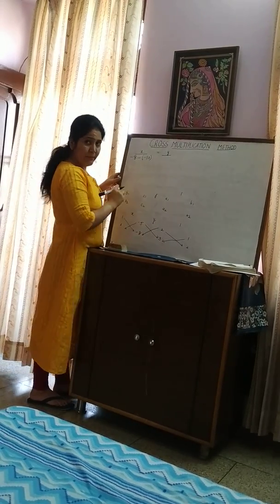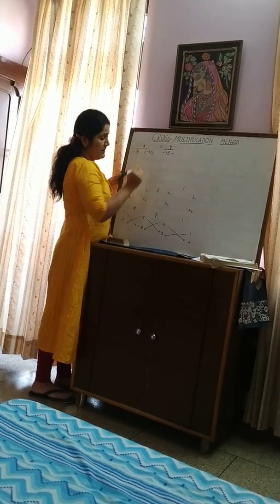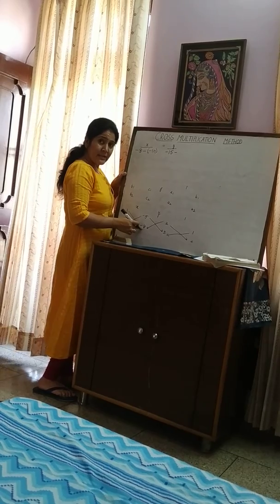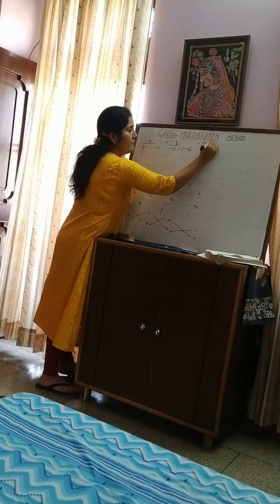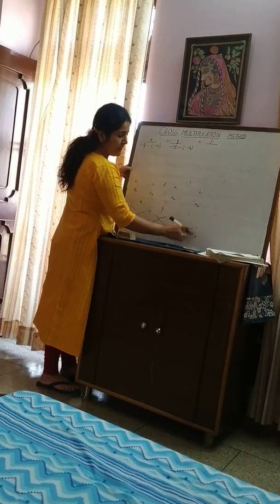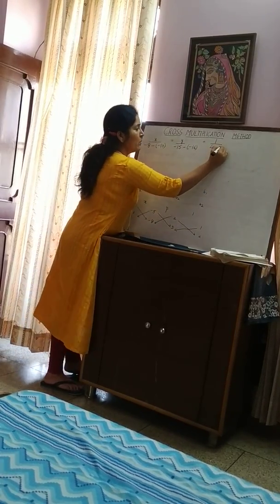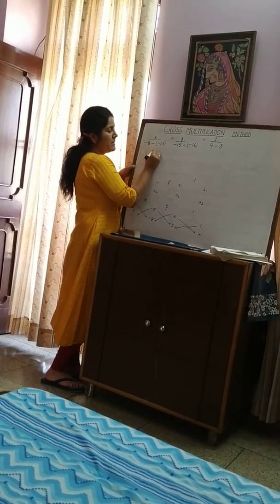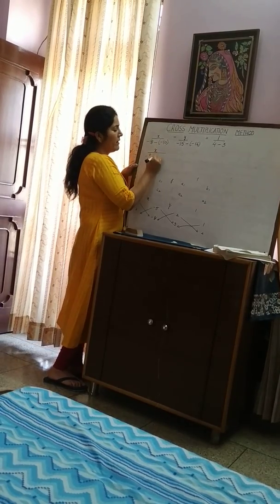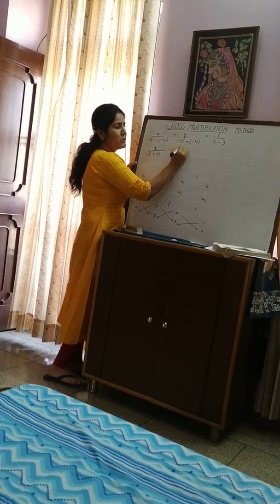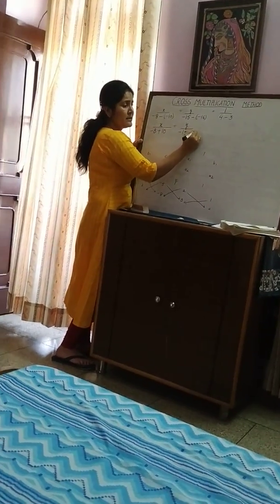In the same way for y: (-5) × 3 = -15, and 2 × (-8) = -16. Similarly for the denominator: 2 × 2 = 4, and 1 × 3 = 3. Now let us solve: x over (-8 minus (-10)) equals (-15 minus (-16)) equals 1. Minus 8 plus 10 = 2. Minus 15 plus 16 = 1.